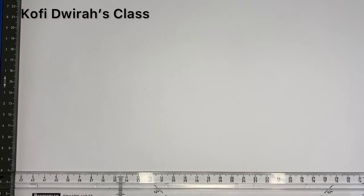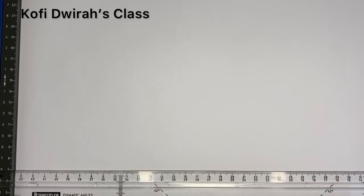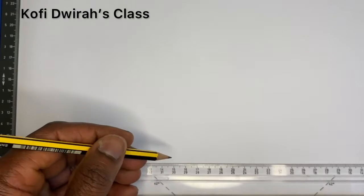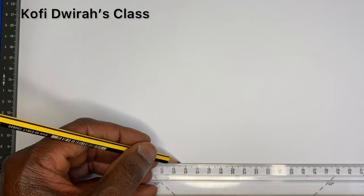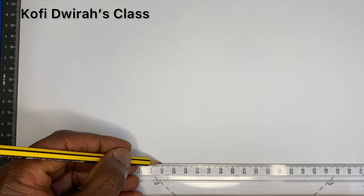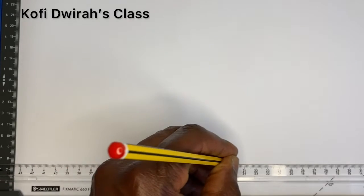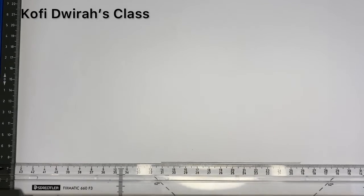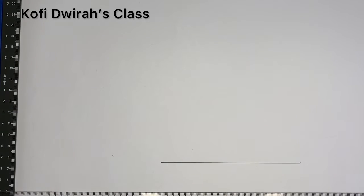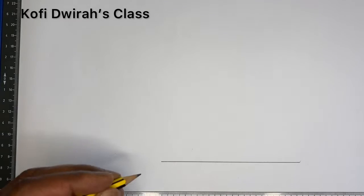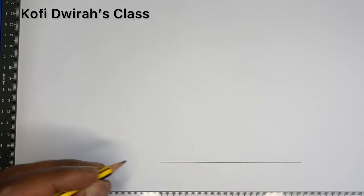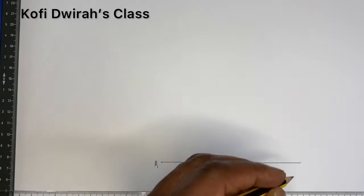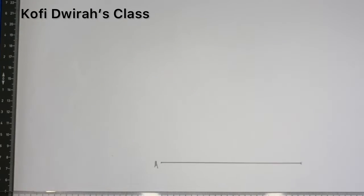It's a very simple method. So we first draw one side of the square. We consider this end to be point A, and the other end to be point B.